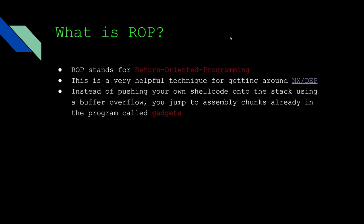ROP stands for Return Oriented Programming. It's a very helpful technique, mainly for getting around NX and DEP — when the stack is not executable and you can't use shellcode, this is what you want to do. Instead of pushing your own shellcode onto the stack, we replace the return address with segments of code that are already in the binary. We're basically hopping around to different snippets of code inside the binary to do what we want, so we can make rudimentary shellcode without writing anything of our own.